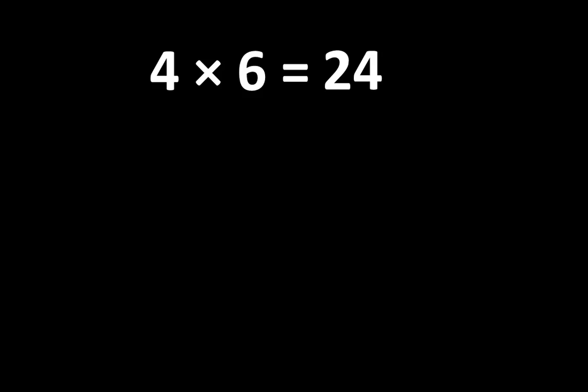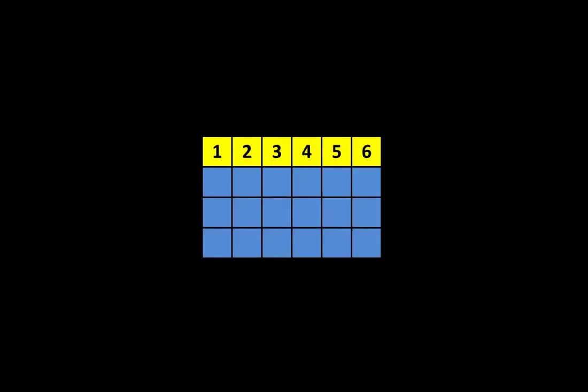Here is an array. We know that an array that is 6 by 4 will have a total of 24. We also know that we can break 24 apart into 6 groups of 4, just like this. And when we put 4 groups of 6 together, the total is 24. We can also break 24 apart into 4 groups of 6, just like this.